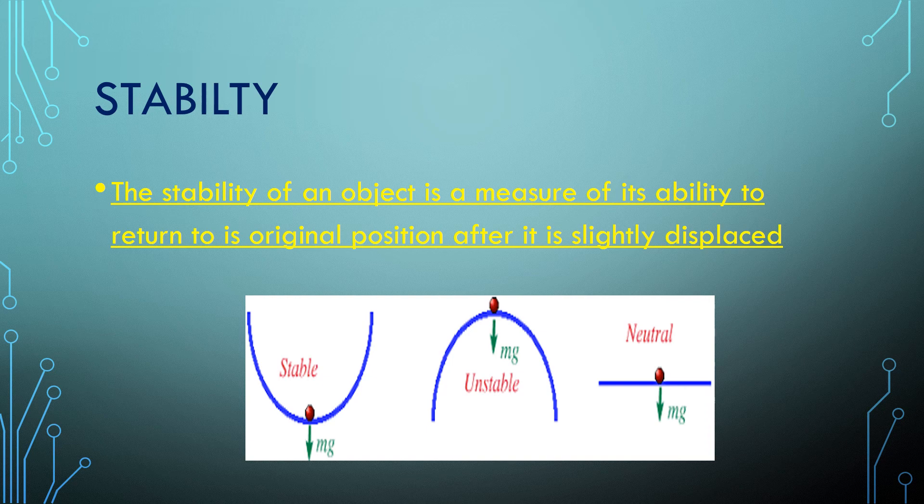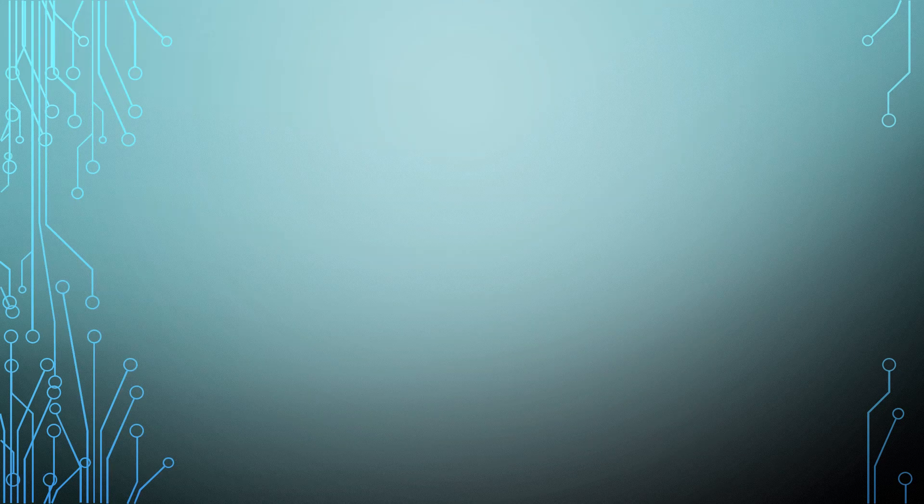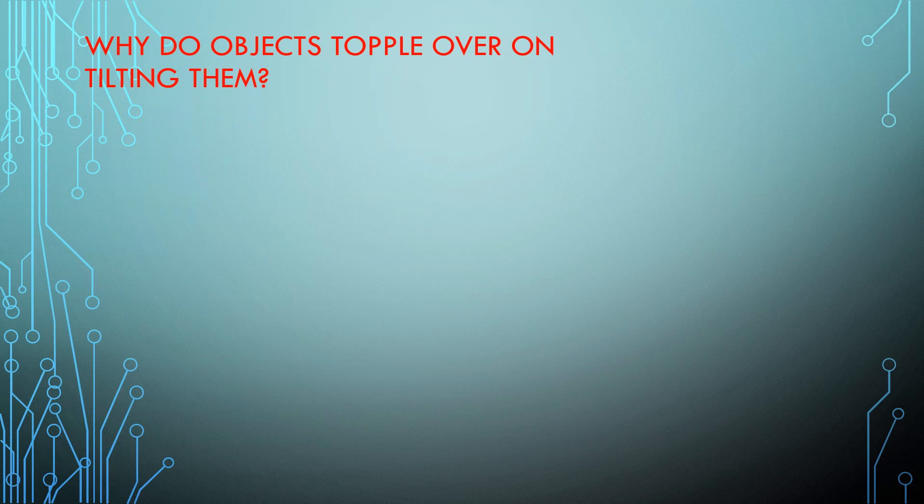If the ball is placed on a convex-like shape and rolled over it, it will be unable to regain its initial position — this is a case of unstable equilibrium. If we roll the ball on a smooth surface, on disturbance it comes to a new position but its center of gravity remains as it was before — this is the case of neutral equilibrium.